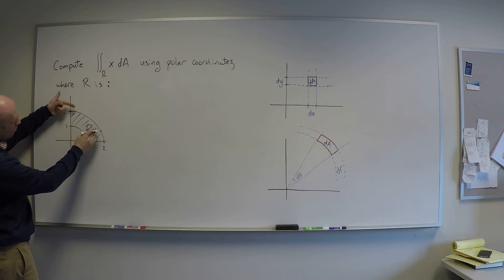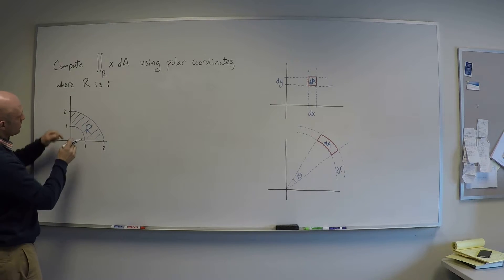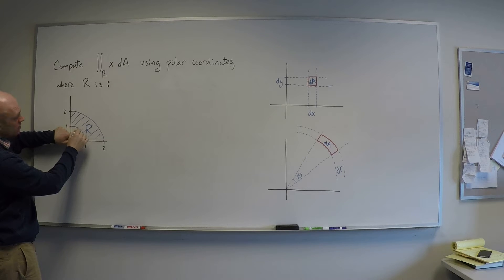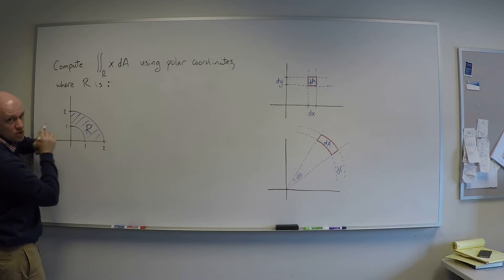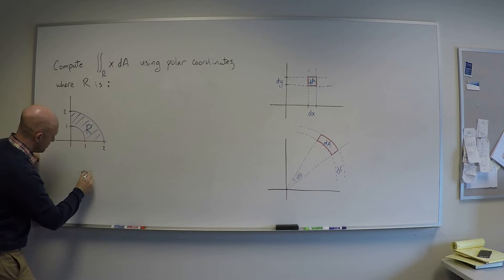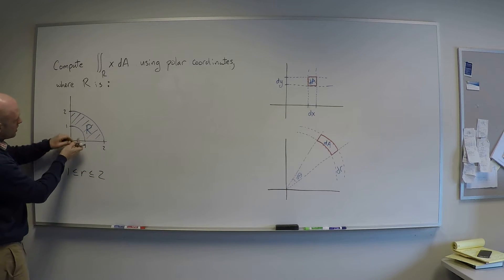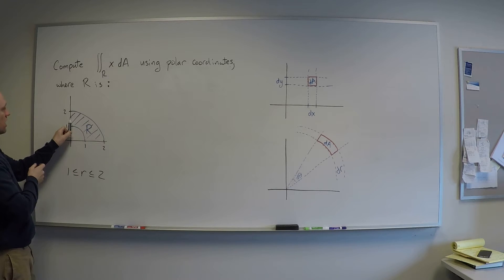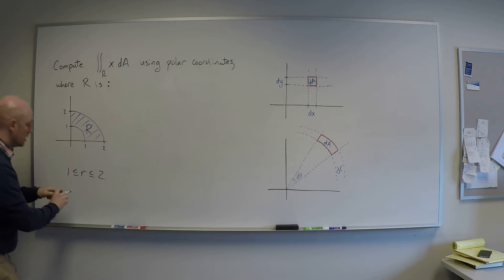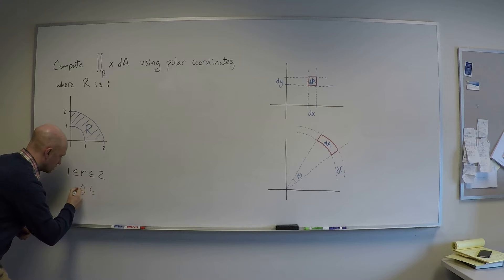Let's look at what the bounds are of this thing in polar coordinates. So I start out with a radius of 1, that's r equals 1, and I go out to a radius of 2. No matter where I am in theta I have to go out exactly to a radius of 2. So that means that r goes between 1 and 2. On the other hand theta starts here and swings around until it gets to pi over 2, so theta goes between 0 and pi over 2.